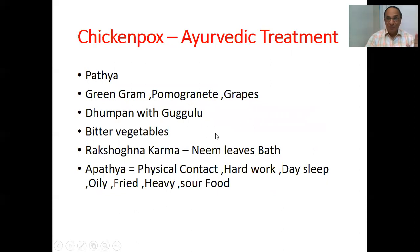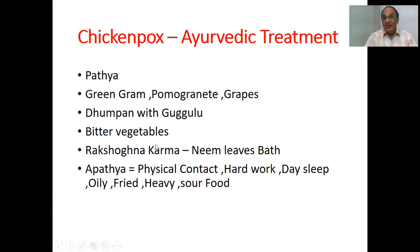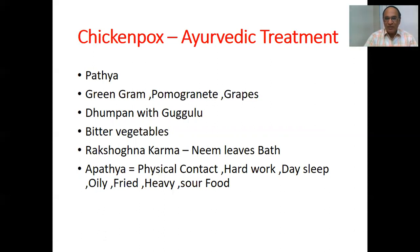Pathyya — do's in Ayurveda: the patient can take green gram (mudga), pomegranate, and grapes. Dhoomapan with guggulu — fumigation treatment by burning guggulu — helps prevent pus formation. Bitter vegetables are also recommended. Rakshogna karma means antiseptic measures. Neem leaves bath — put neem leaves in water and take a bath.